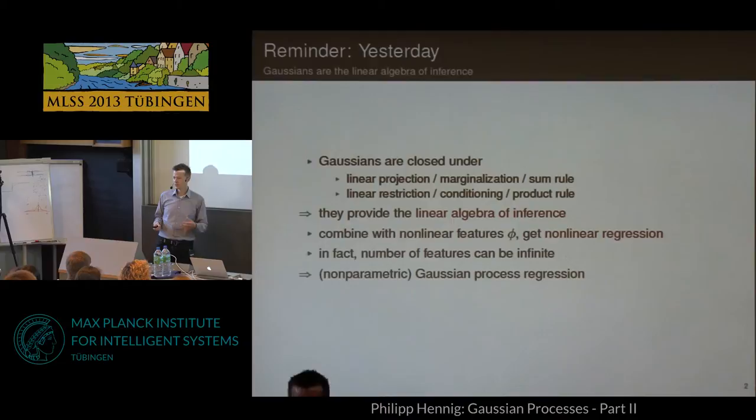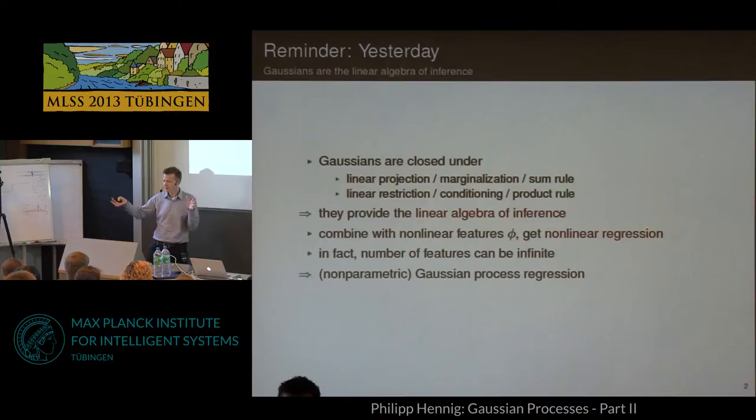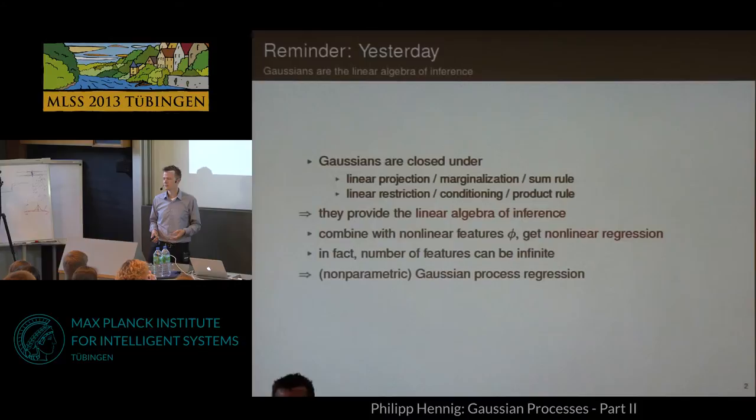Then we moved on and realized that for some features we can do this kind of limit process where we increase the number of features more and more until a sum turns into an integral and we have essentially an infinite number of features. That's also called a kernel, and this is called non-parametric regression. The corresponding probability distribution over the weights on these features amounts to an infinite-dimensional Gaussian distribution — a Gaussian process. But it's really just a limit process with very little extra structure.